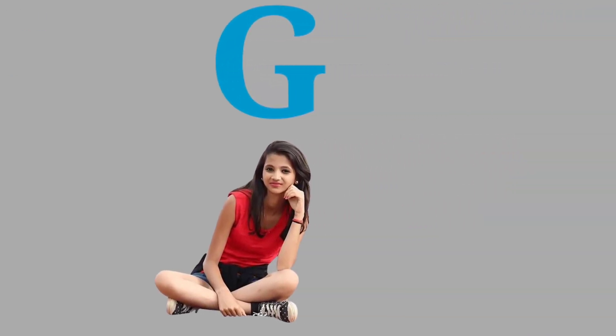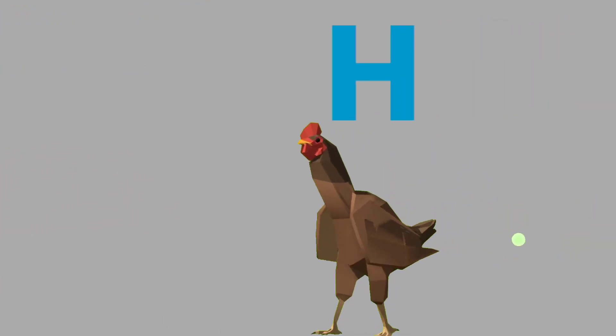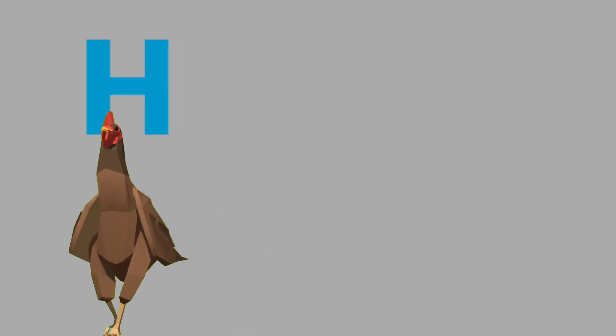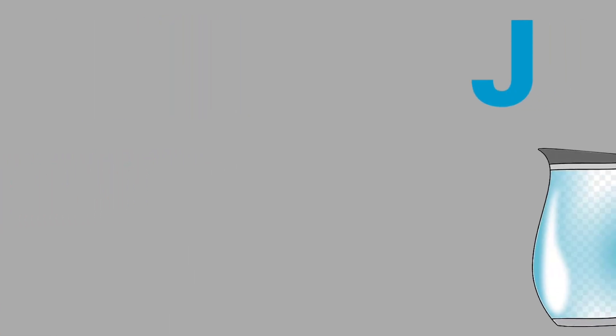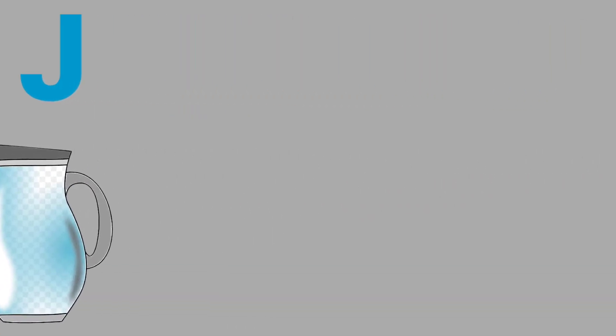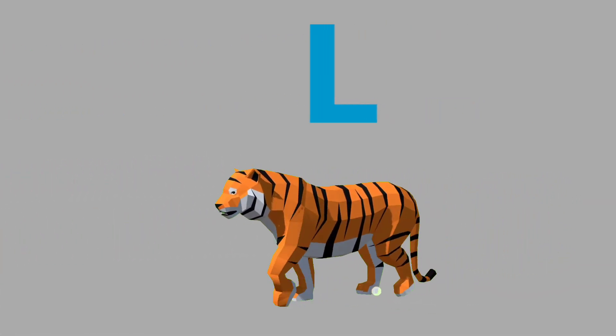G for girl, H for hand, I for ice cream, J for jack, K for kite, L for lion.